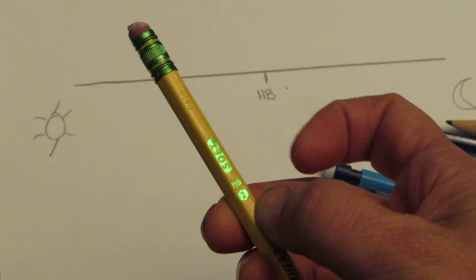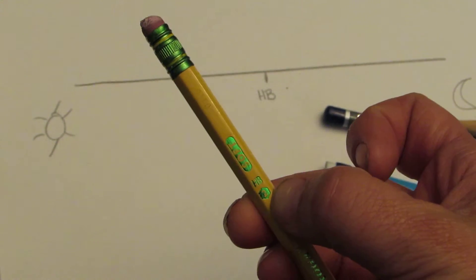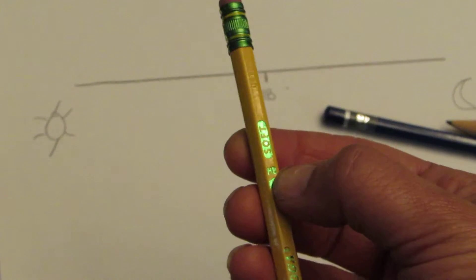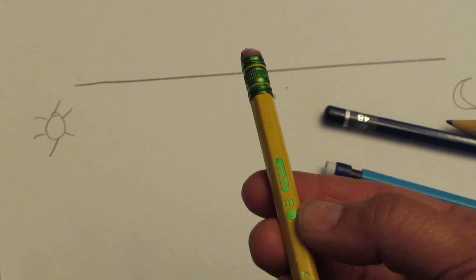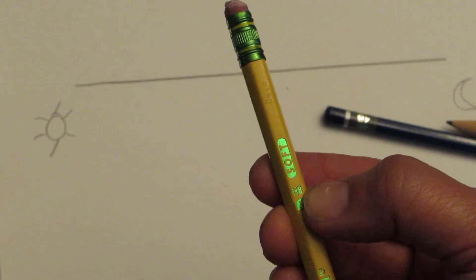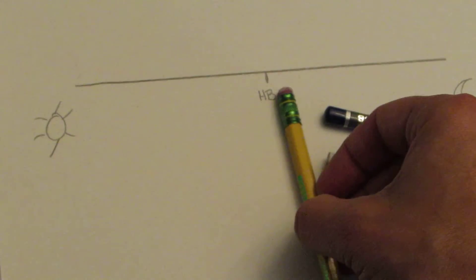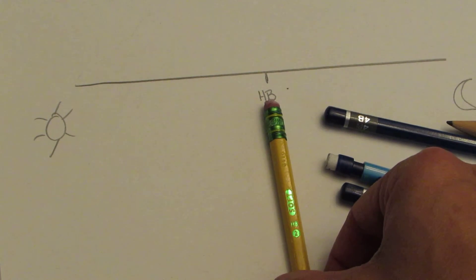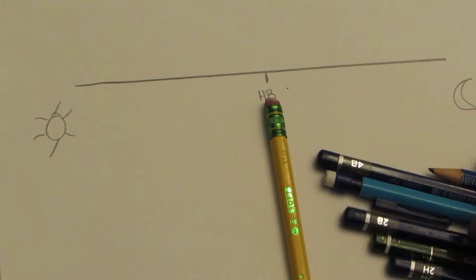To begin with, you'll see a number two on here. Number two is the same as also an HB pencil, so if you've ever taken a standardized test, they always tell you to take a number two pencil. It's also the exact same as an HB, and where I would put that on my shading pencil line is right here in the center. That's the center of everything.